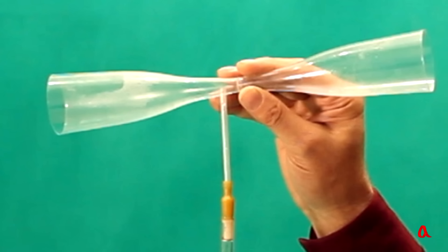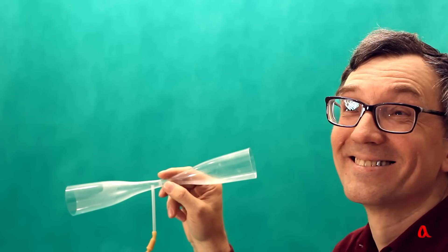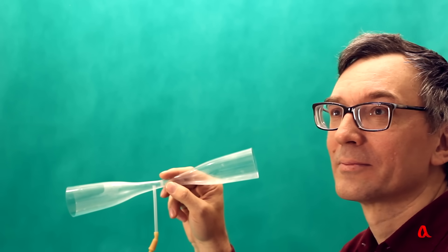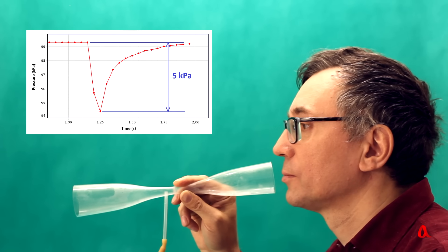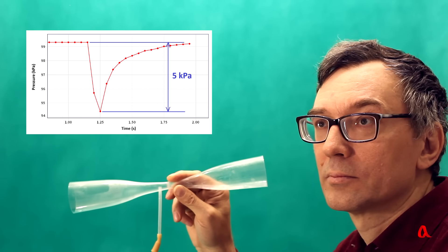To check this, let us insert a tube into the wall of the neck, connecting it to a pressure sensor. When we blow the pipe, the sensor shows the decrease in pressure by 5 kPa, which is 50 cm of water column.